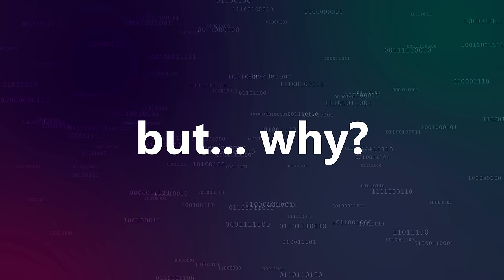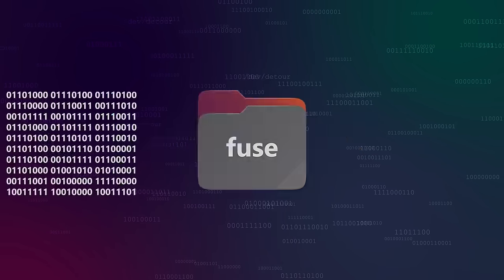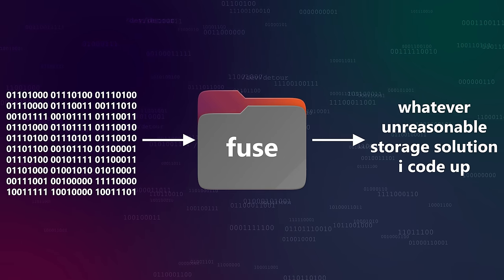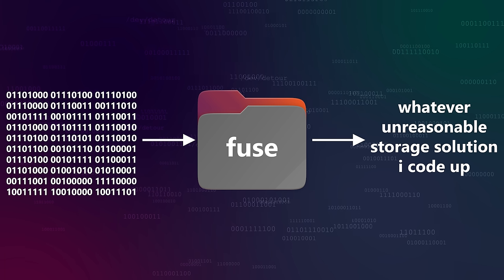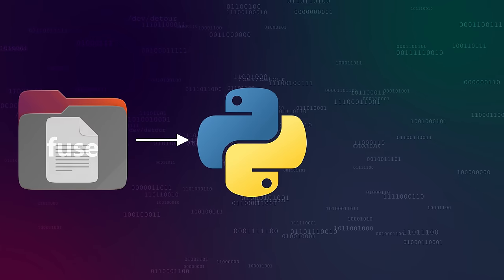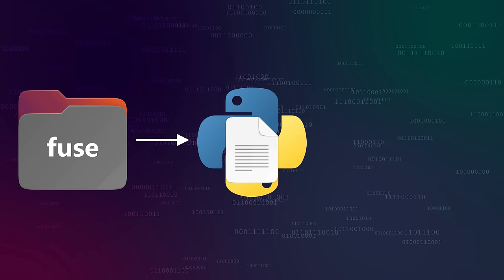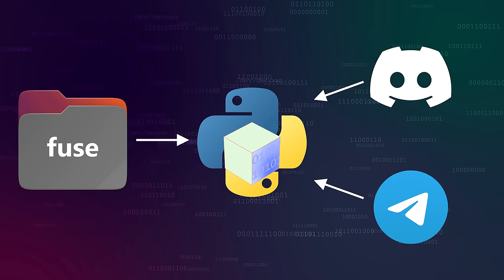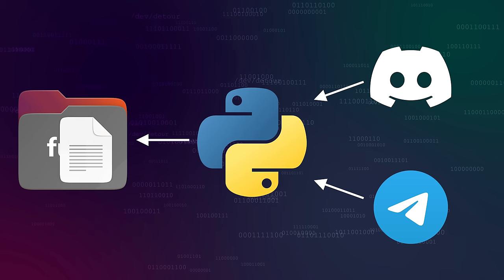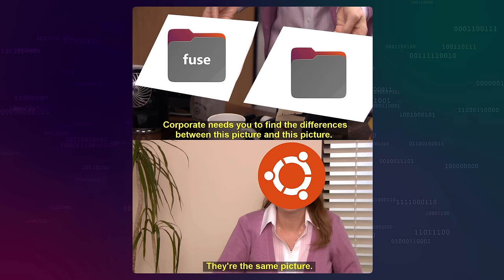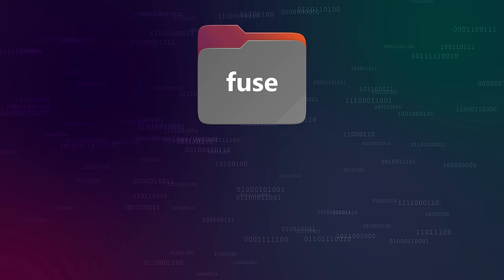This might not seem like a big deal, but here's the cool part: whenever I interact with a directory that a FUSE program is mounted to — for instance, copying a file to or from it — I'm responsible for writing the logic for how the data will be handled. libFUSE has Python bindings, so I can write a program that handles writes by uploading files to Discord or Telegram as message attachments. For reads, it downloads the appropriate files, sticks the contents together, and returns the result. From the perspective of my OS, this special directory is no different than any other folder.